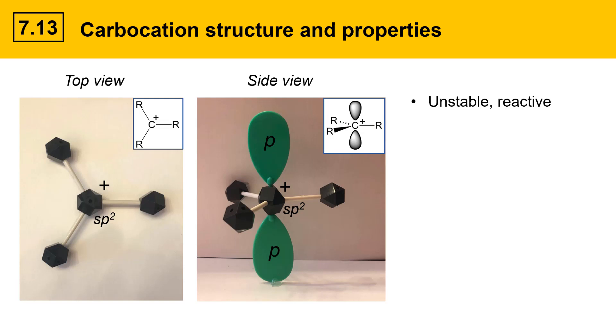Carbocations are unstable and reactive. Carbon lacks an octet and that's the primary reason for their reactivity. They're also very electron poor and they're strong electrophiles. In other words, electron rich species like to come in and react with the carbocation carbon.